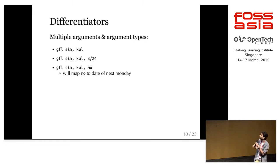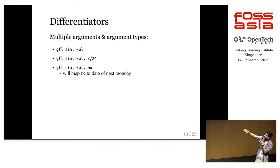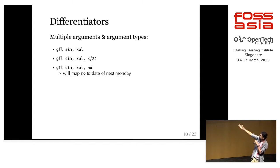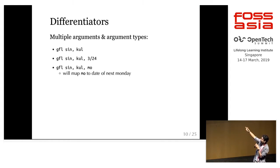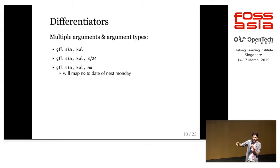What is different? So one difference is that we have multiple arguments. We can type in something like 'GFL SIN,KUL', or even three arguments — the second example would search for flights on March 24th. And arguments can be typed dynamically: instead of a date, you can type 'MO' and it will map to the next Monday.